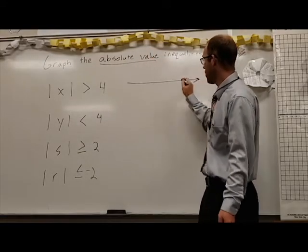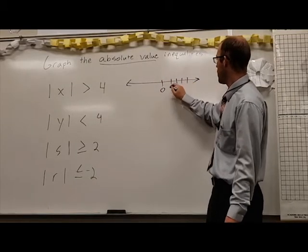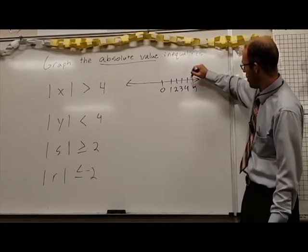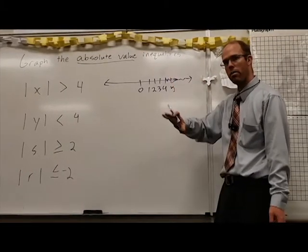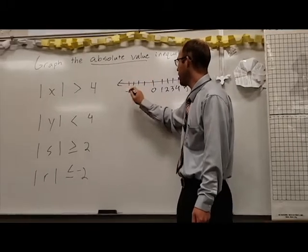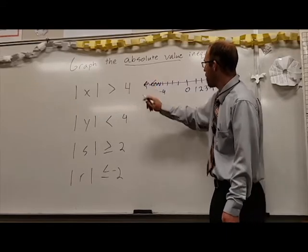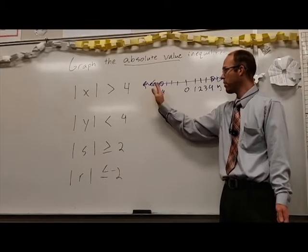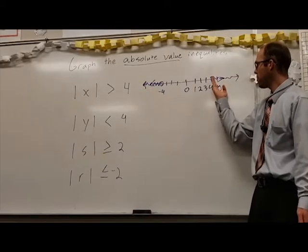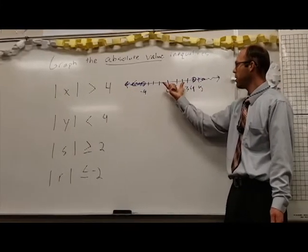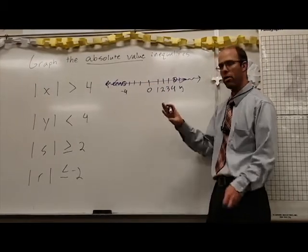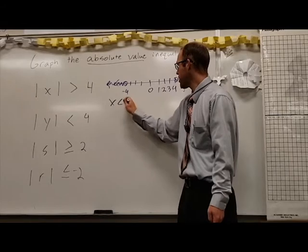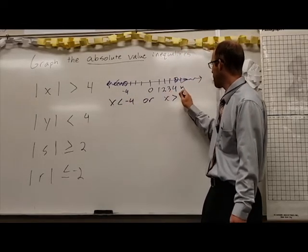Our first task is to graph those. Here's zero, and then we count to four. We are farther away from zero than four, so that would be all numbers to the right of four. We have a second option on the other side: negative four. Everything past negative four is also farther away than four from zero. So we have numbers on the left-hand side and right-hand side farther away than four, and numbers in between do not work. We can write a compound inequality using 'or': x is less than negative four or x is greater than positive four.